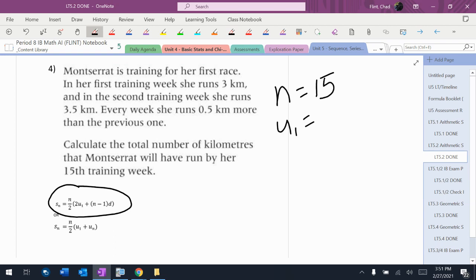N is 15. U1 is 3, that's the amount she runs the first week. I'm assuming it's a she, I'm not sure. And then D, the difference, is 0.5, meaning she runs 0.5 kilometers more each week.